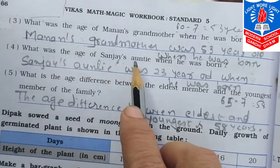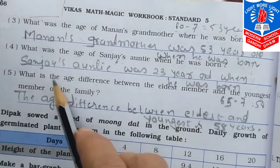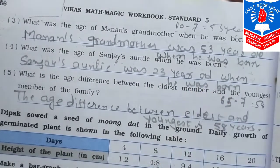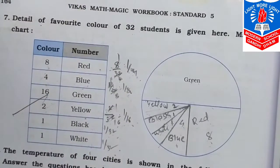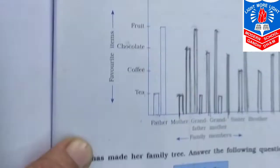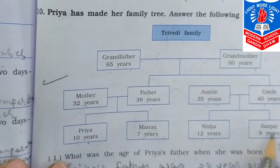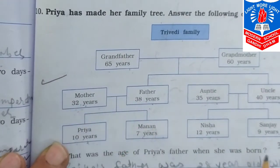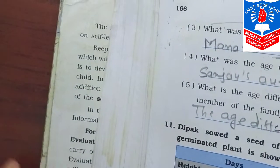What was the age of Sanjay's auntie when he was born? Sanjay's auntie is Priya's mother. Priya's mother is 32 years old and Sanjay is 9 years. So 32 minus 9 equals 23. Sanjay's auntie was 23 years old when he was born.